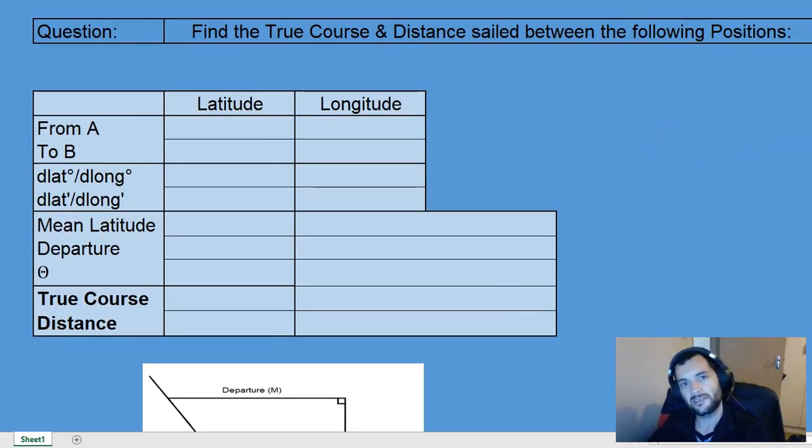We'll be dealing with a shorter distance. In this case we've got a distance of less than 600 miles, so we will be doing a mean latitude plain sailing question. What we need to find is the true course and distance between the following positions.